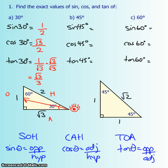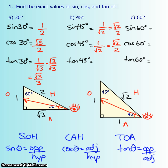For 45 degrees, we use the isosceles triangle. The eyeball can be at either end since both angles are 45 degrees. The opposite side is 1, hypotenuse is root 2, and adjacent is 1. Sine 45° = 1 over root 2, which after rationalizing is root 2 over 2. Cos 45° = adjacent over hypotenuse, which is the same as sine. Tan 45° = opposite over adjacent = 1/1 = 1.